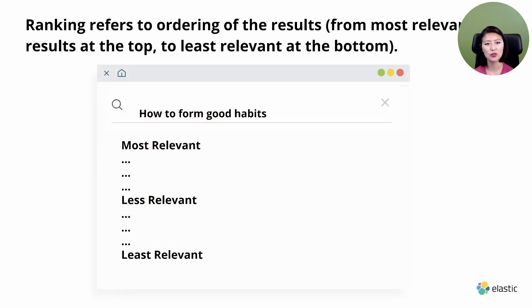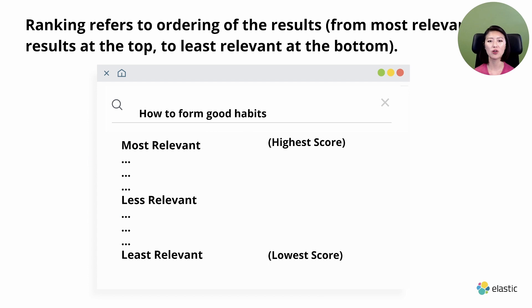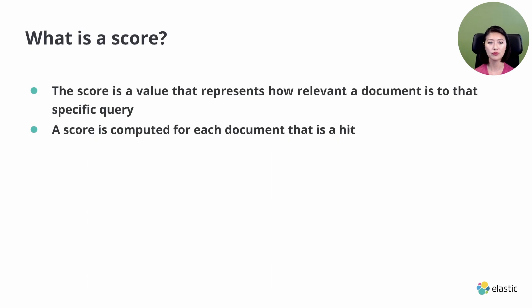When you look at your search results, the most relevant results are at the top and the least relevant are at the bottom. This ranking is determined by a scoring algorithm — each result is given a score, and ones with the highest scores are displayed at the top. A score is a value that represents how relevant a document is to a specific query, and a score is computed for each document that is a hit. Hits are search results sent to the user. The higher the score, the more relevant the document, and it ends up higher in the order.